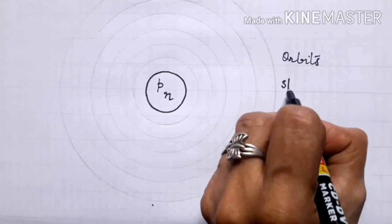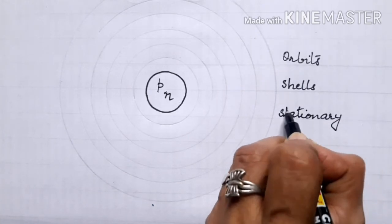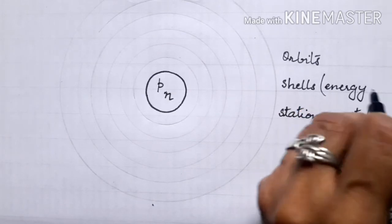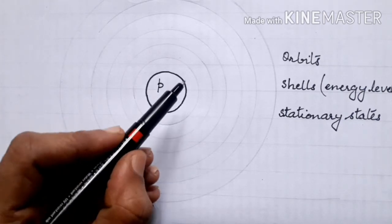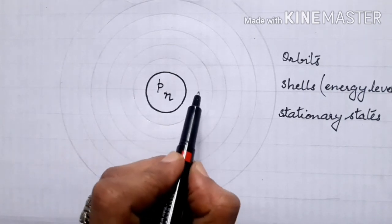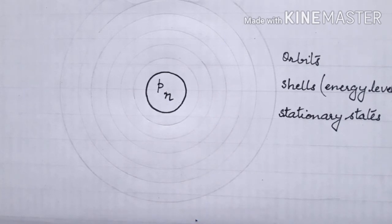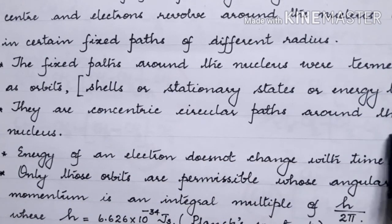The circular paths having fixed radius around the nucleus are called orbits, or shells, or stationary states, or energy levels. Associated with each orbit is a definite energy. The smallest orbit is the one closest to the nucleus, and as you move further away, the size of the orbit keeps on increasing.